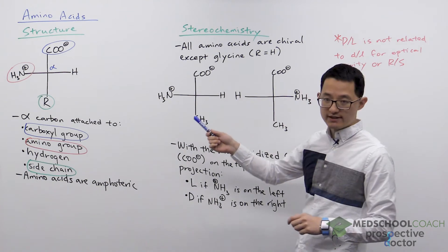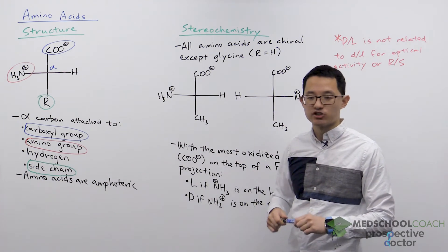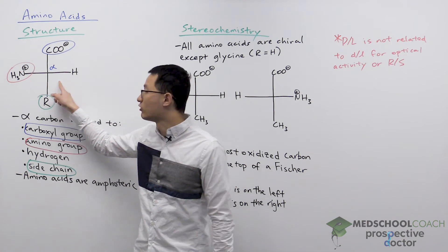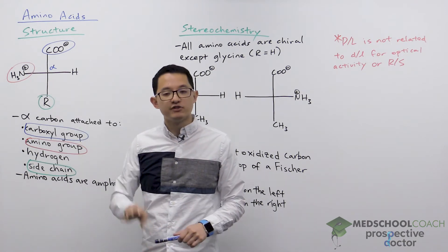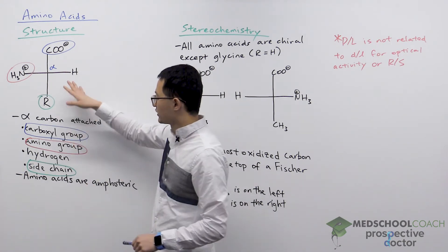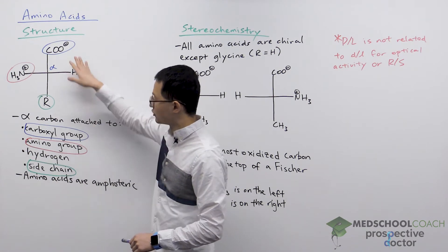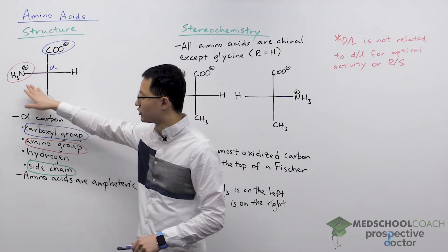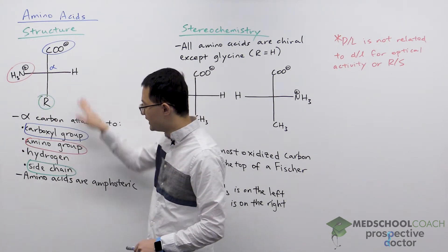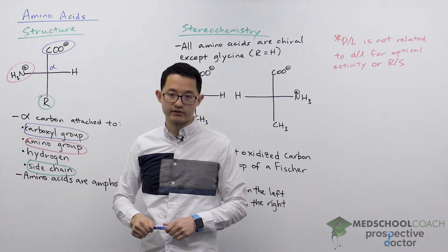First of all with amino acids you want to know what their basic structure is. You have a carbon in the center called the alpha carbon bound to four groups. The four groups include a carboxyl group, an amino group, a hydrogen, and one of 20 possible side chains.